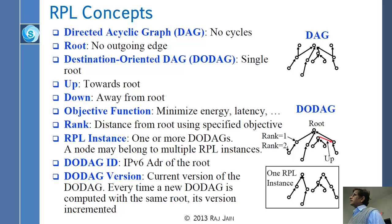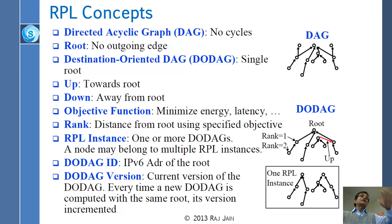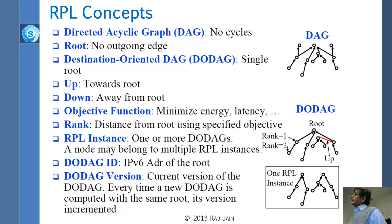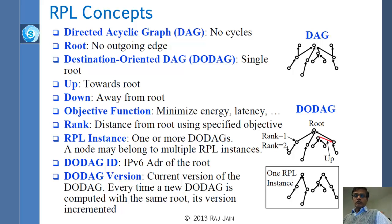The objective function minimizes energy or latency. Rank is your distance from the root — generally expressed as an integer. For example, if your power cost is 1.3 millijoules, you divide by some minimum unit to get an integer — that is your rank. An RPL instance is one or more DODAGs. For example, one RPL instance may have two DODAGs, each with its own root, and a node may belong to multiple RPL instances.